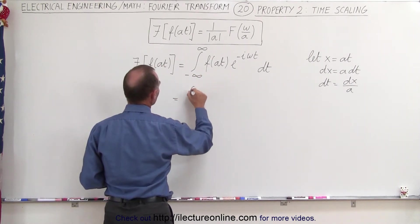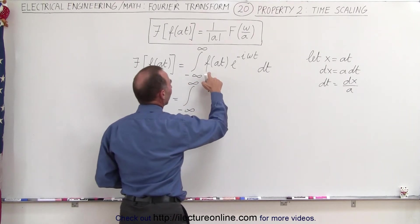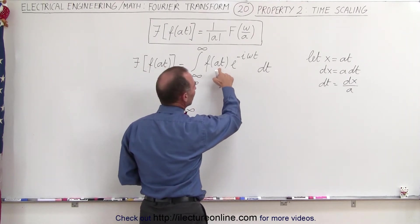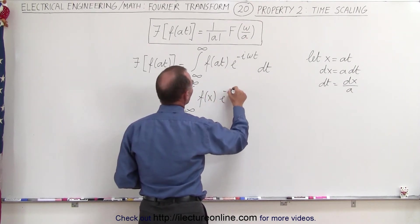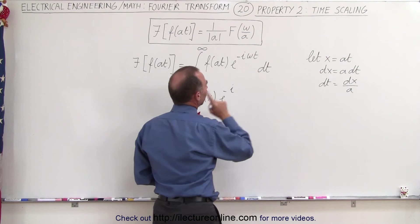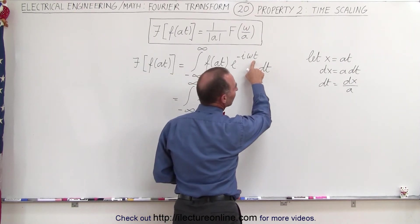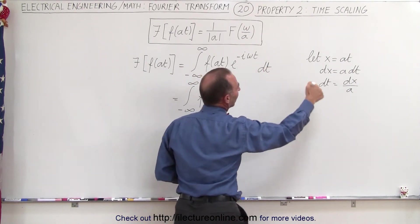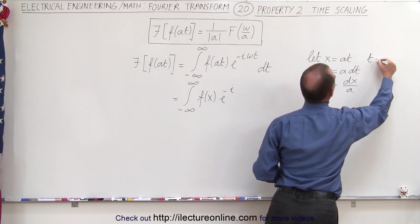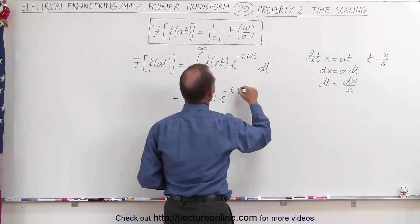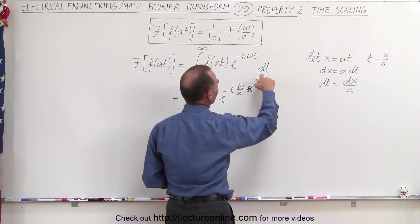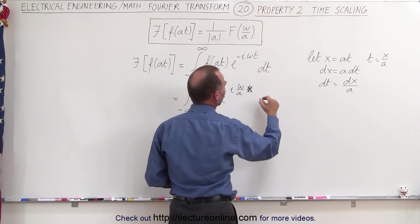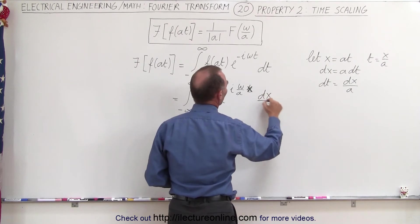So this would then be equal to the integral from minus infinity to infinity of f of at. Well, instead of at, we'll write x. So we have f of x. And then e to the minus i—t will be, let's see here, t will be x over a, right? So t will be equal to x over a. So that gives us omega divided by a times t. And instead of dt, we'll have to write dx over a.